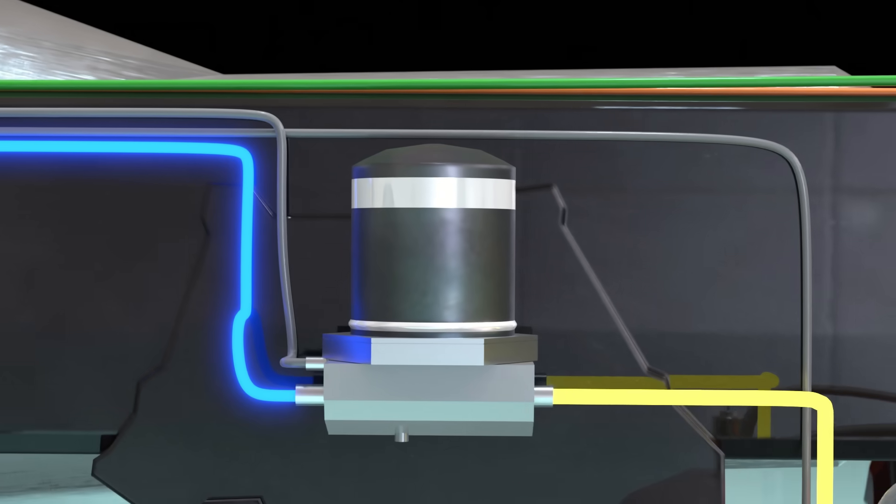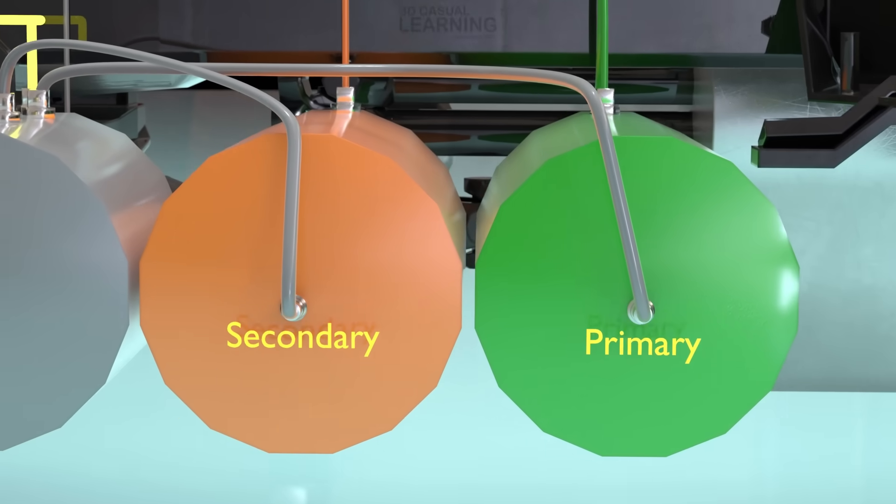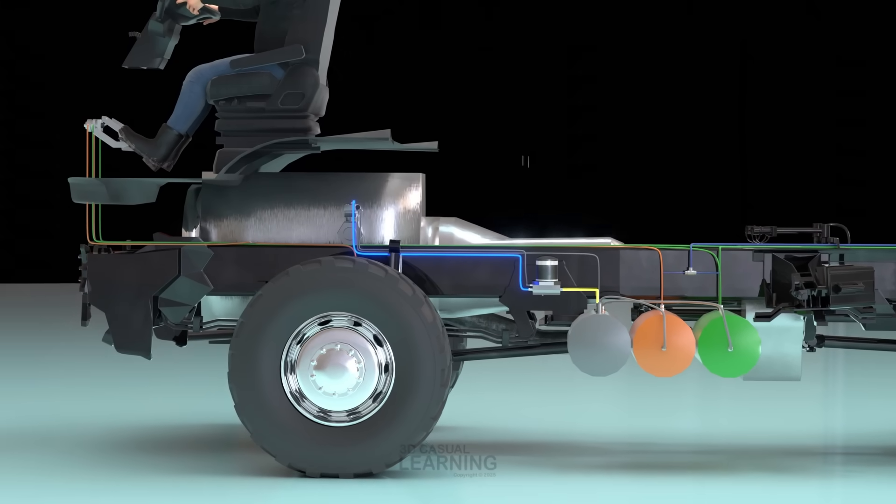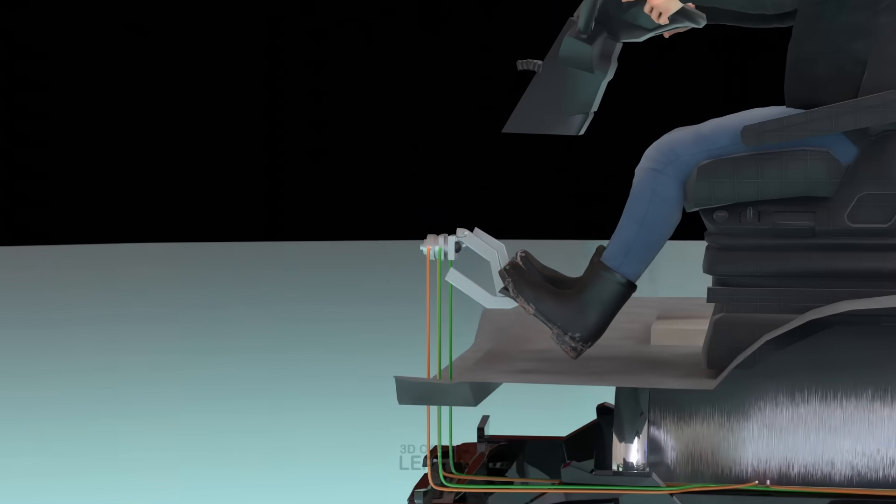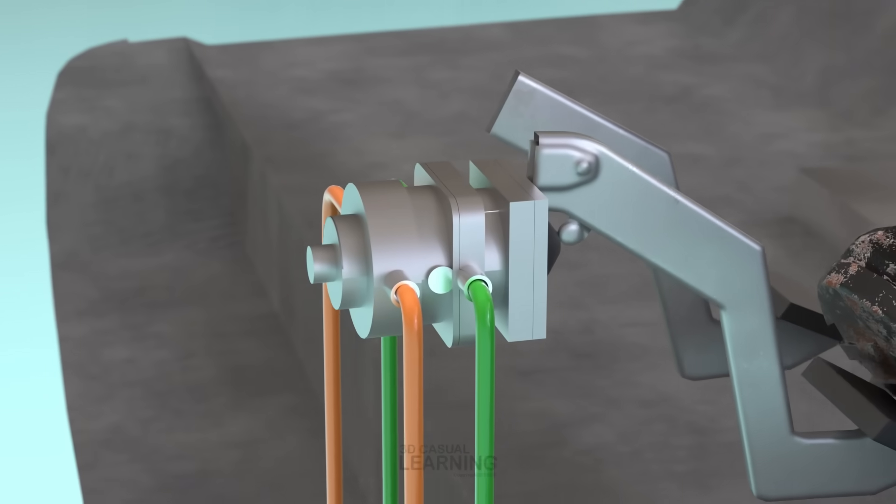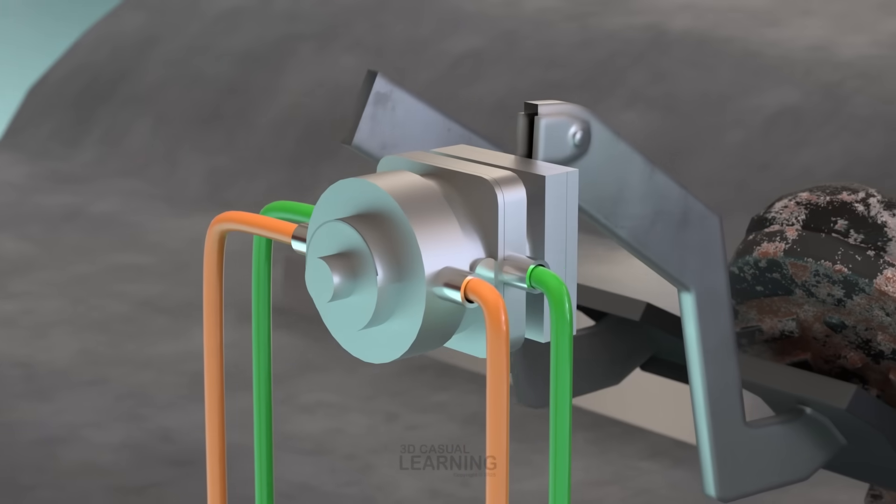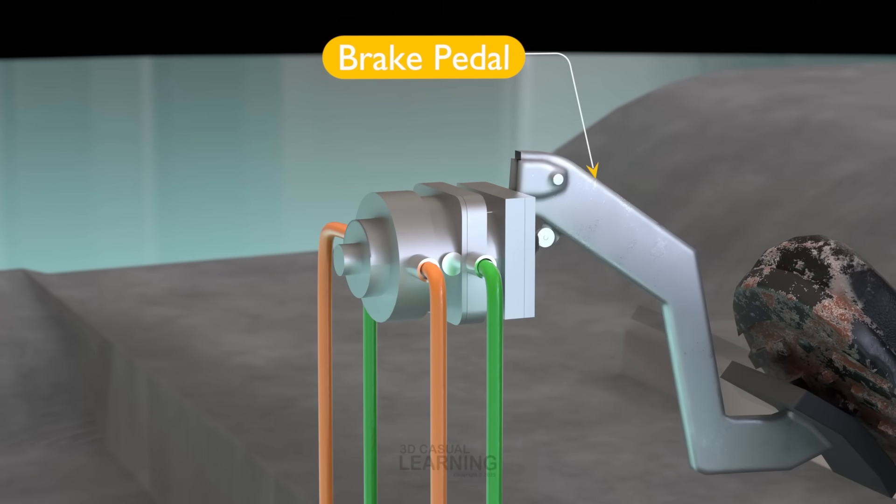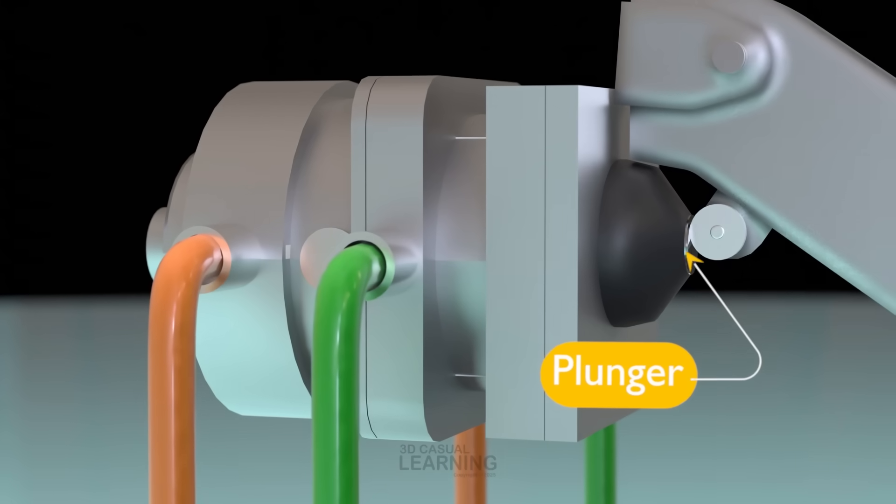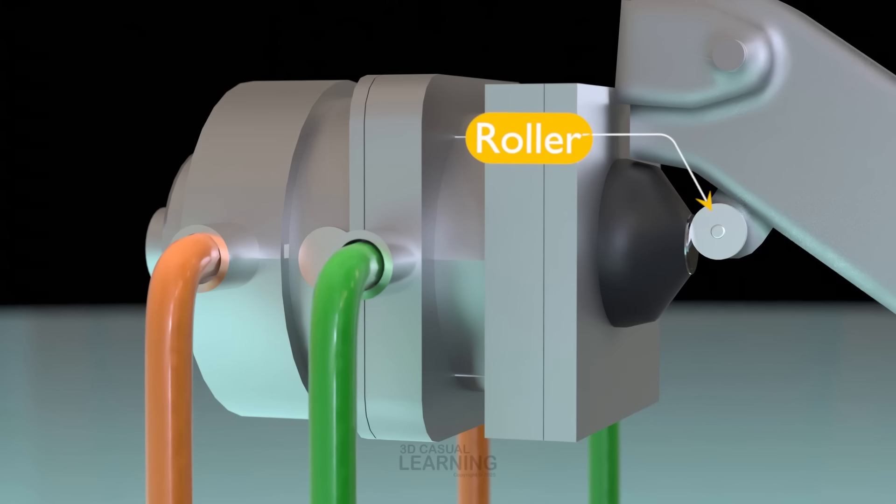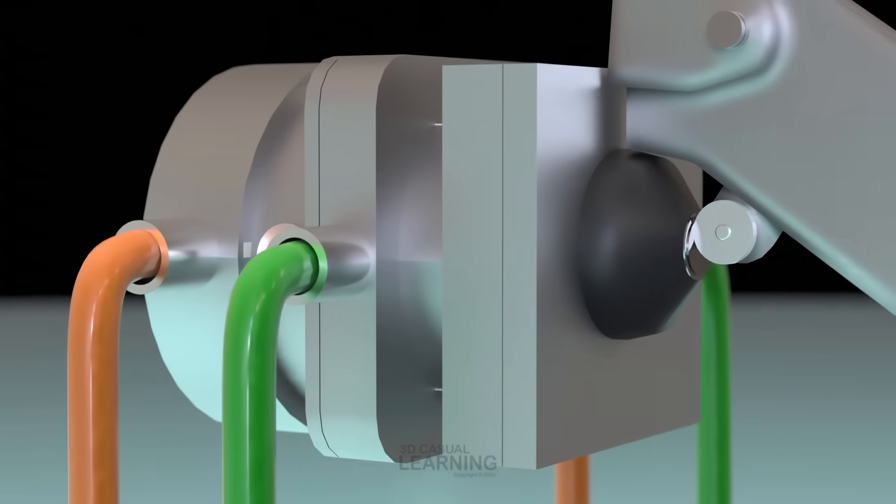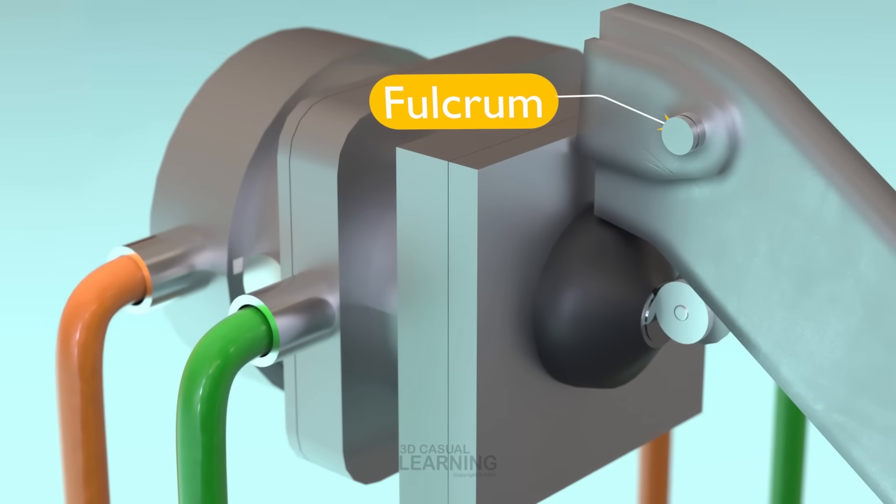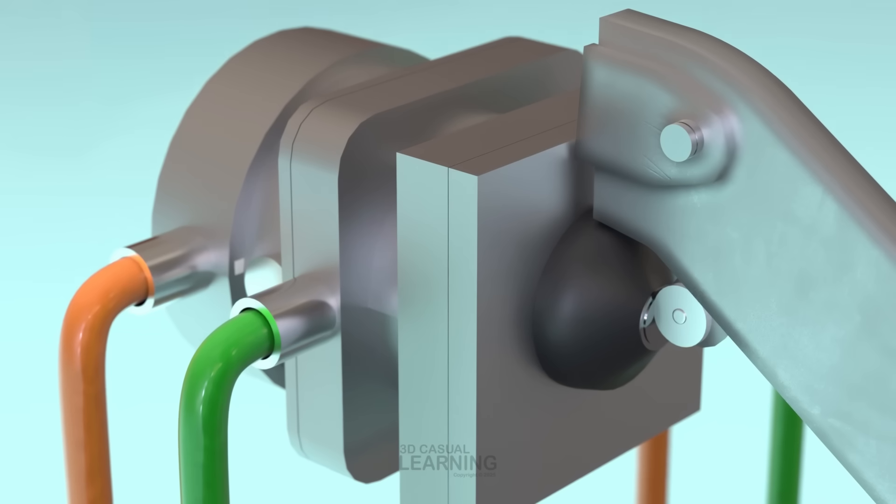The service brake operation begins at the two service reservoirs, which serve as the starting point for a dual or split brake system. To utilize these separate reservoirs effectively, the system relies on a dual brake valve, a single unit that contains two independent valves housed together, both operated simultaneously by one foot pedal. The actuation components include the pedal, the plunger, the roller, boot, and fulcrum pin, all working together to transmit the driver's input into braking force.